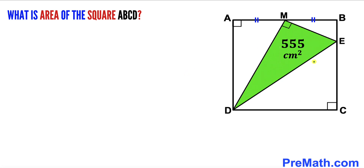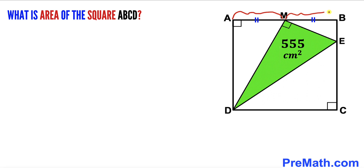Welcome to pre-math. In this video we have a green right triangle EMD fully confined in a square ABCD, such that the area of this green triangle is 555 centimeter square. Moreover, segment AM equals segment MB — in other words M is the midpoint — and our task is to calculate the area of square ABCD.